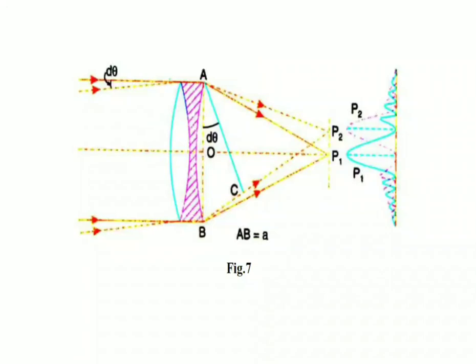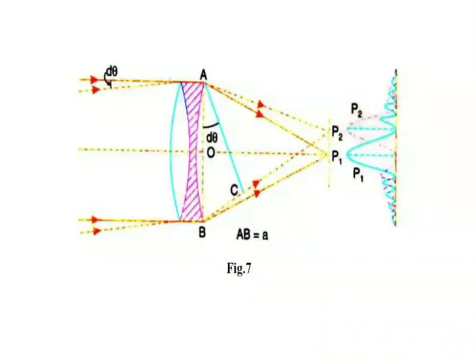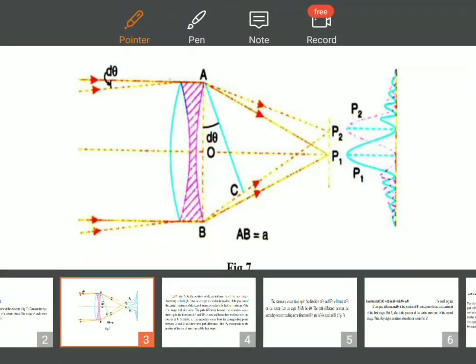Therefore, the Fraunhofer diffraction pattern is produced in the focal plane of the lens. This is a schematic representation of how the telescope observes two distant objects. The Fraunhofer diffraction patterns of the two closer objects are shown. P1, indicated by the dark line, is the diffraction pattern of the first image, and P2, indicated by the dotted lines, is the diffraction pattern of the second image. The central maxima of P1 coincides with the first minima of P2, and in the same way, the central maxima of P2 coincides with the first minima of P1.